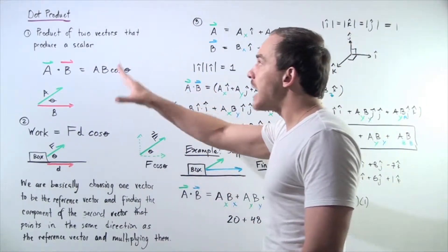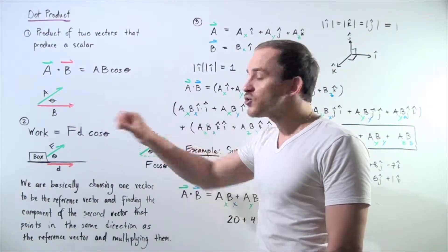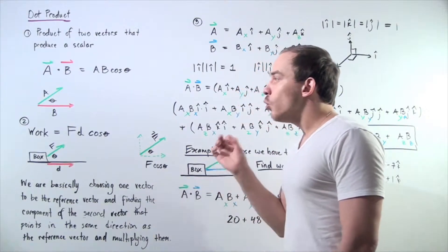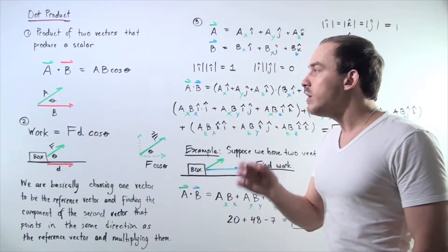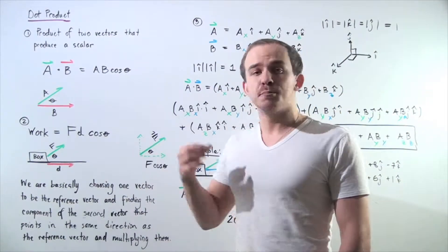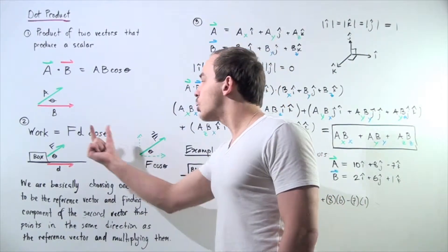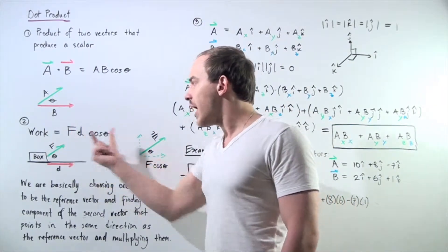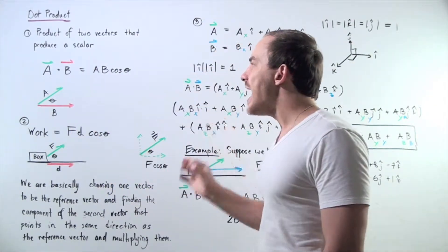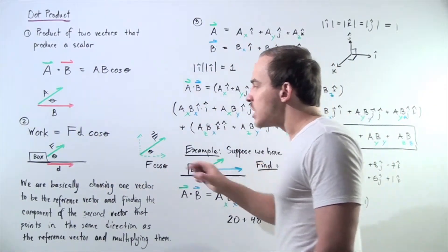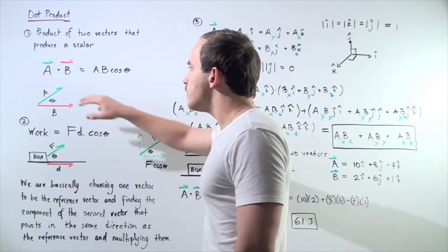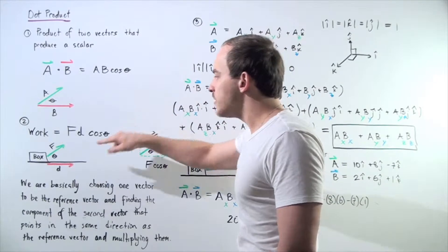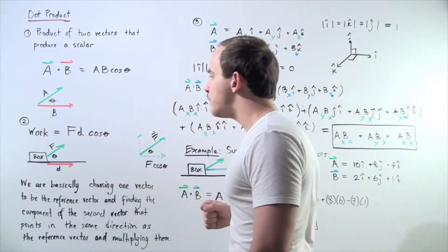So one very common example of dot product in physics is work. Work is given by the following equation: we take the force, multiply it by our displacement, and take the cosine of the angle separating our two vectors, and we get the work done. Force and displacement are both vectors, and theta is simply the angle separating our two vectors.